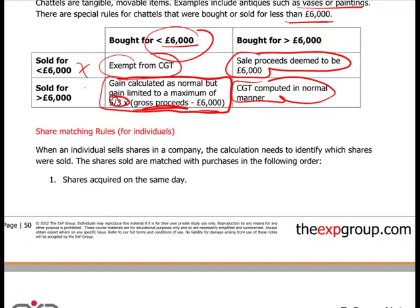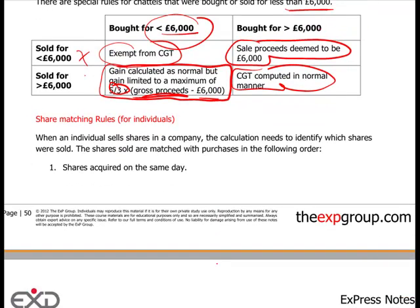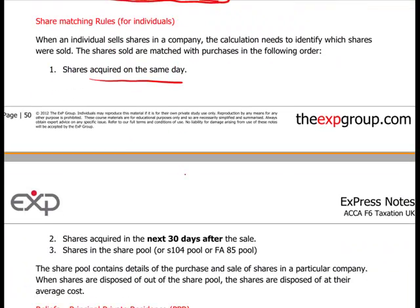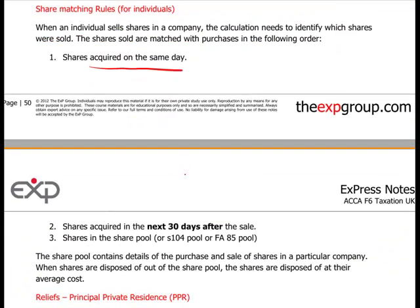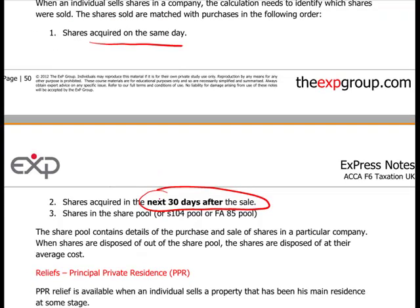Share matching rules for individuals: when you sell shares, you match them in the following order — first, shares acquired on the same day; second, shares acquired in the next 30 days; and third, shares in the share pool. This is quite different from the rules for companies.